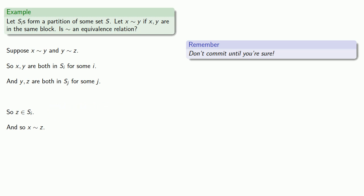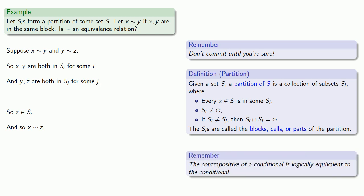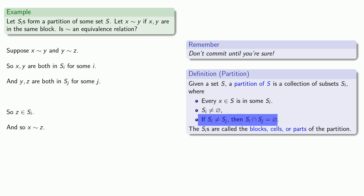Well, how can we do that when we know nothing about what si or sj look like? Definitions are the whole of mathematics. All else is commentary. What we do know is that the si's form a partition, and we have our definition of a partition. And here we see that if si is not equal to sj, then their intersection is the empty set. Well, that's not what we have. But remember, the contrapositive of a conditional is logically equivalent to the conditional. And here's a conditional. And its contrapositive would be if the intersection is not empty, then the two parts have to be the same thing. And that's what we have. Because our intersection contains y, then our two parts have to be the same subset.